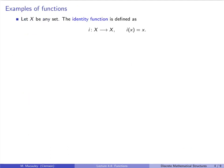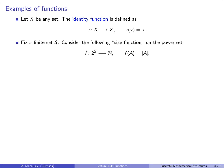Let's give some examples of common functions. First, for any set X there is an identity function, usually written with a lowercase or uppercase i, with domain and codomain X defined by i(x) = x. Next, fix a finite set S. The size function has domain equal to the power set of S, codomain the natural numbers, and F(A) = |A|, the size of the set.